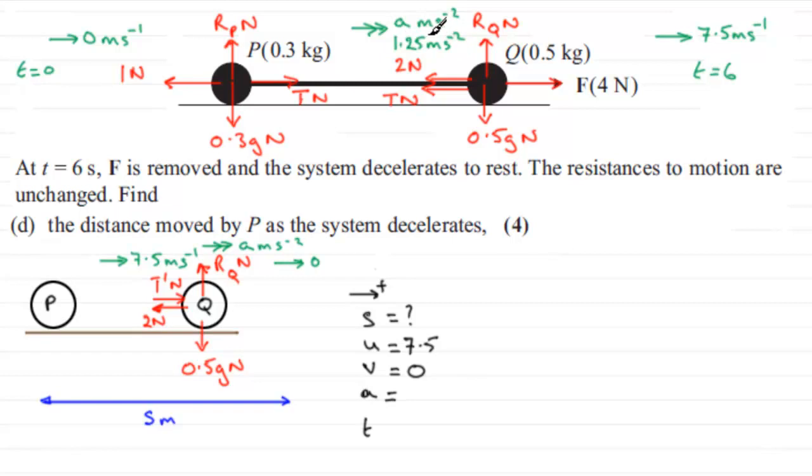But, the problem is, if we start to resolve on Q, we're going to involve this force T dash Newtons, the thrust acting on Q. And we don't know that. So it's going to be a bit of a problem. So let's turn to P and see what forces we've got acting on P.